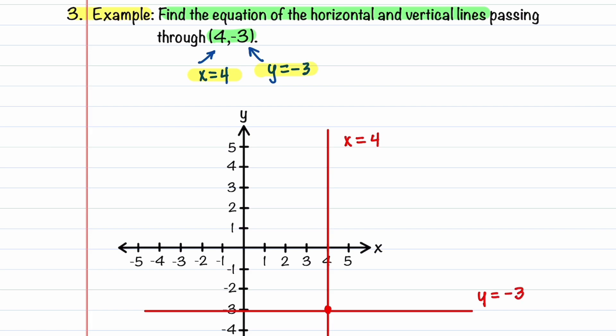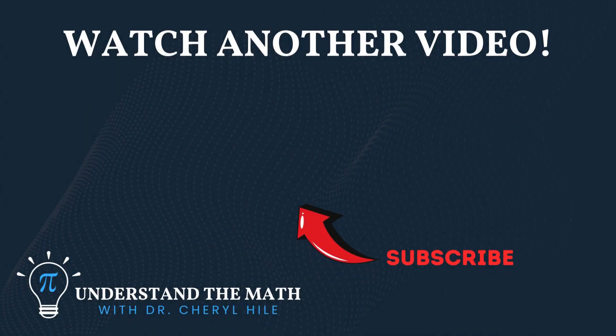And that's all there is to it. Let's quickly recap what we learned: vertical lines are written as x is equal to a constant, and horizontal lines are written as y is equal to a constant. If this video has been helpful to you, please consider subscribing to my channel. Keep believing in yourself and have a great rest of your day.